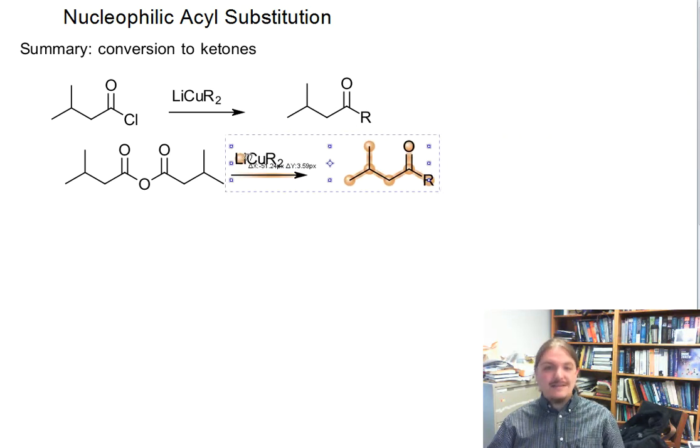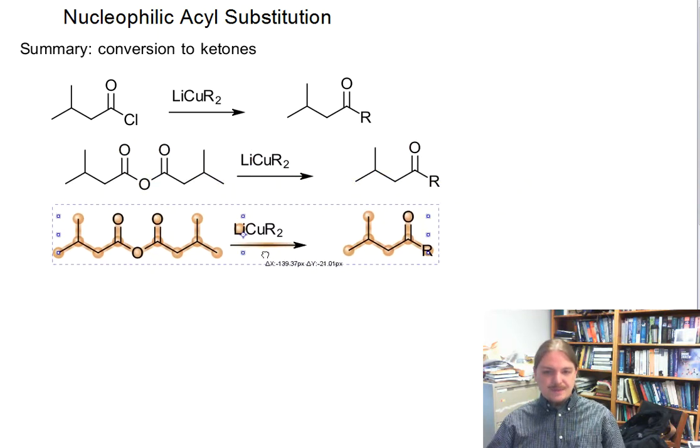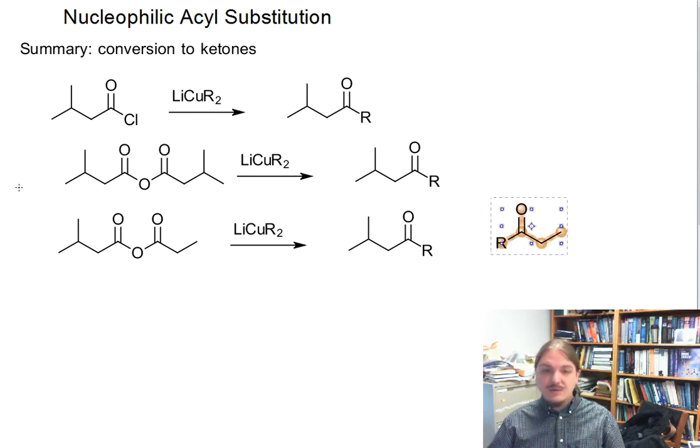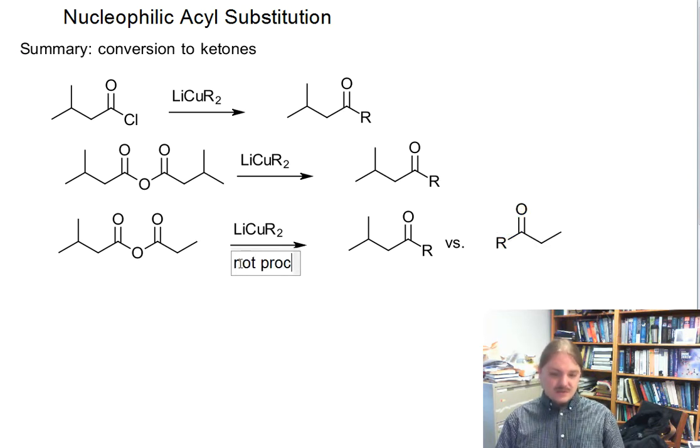Part of the anhydride has to be the leaving group, and so while it works with symmetric anhydrides, with non-symmetric anhydrides there's more than one possible product because the Gilman reagent could react at one carbonyl group or the other, with very little opportunity to control. And so these reactions on mixed anhydrides are generally considered not productive.